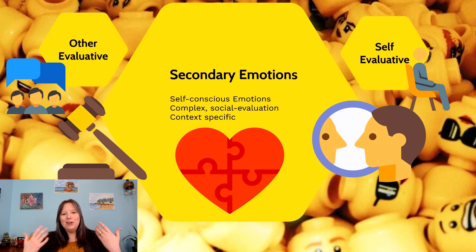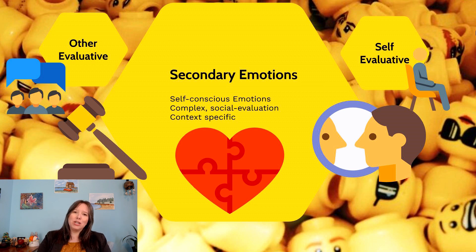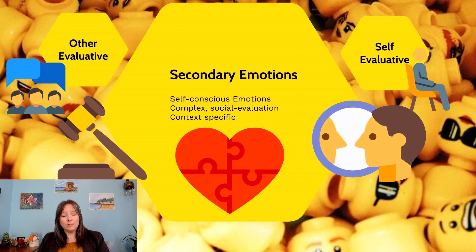Once you know who you are and who others are, you can become more aware of yourself and of others. Some of these secondary emotions are more context-specific and tend to be more situationally based rather than biologically based. I like to cluster them into two categories: other-evaluative — the emotions we feel when we judge others — and self-evaluative — the emotions we feel when we judge ourselves.